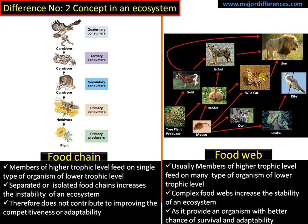Now take the case of a food web. In an ecosystem, food webs are commonly present. You can see that this rabbit may be preyed upon by a jackal or a wild cat. Members of a higher trophic level like the jackal can feed on cod, rabbit, etc., so it has many options. There is also competition for a common prey, which improves the adaptability of the organism.